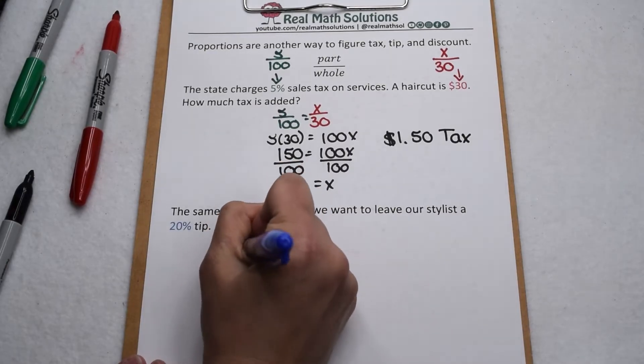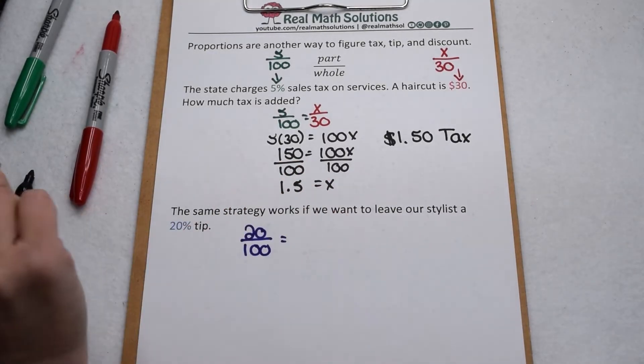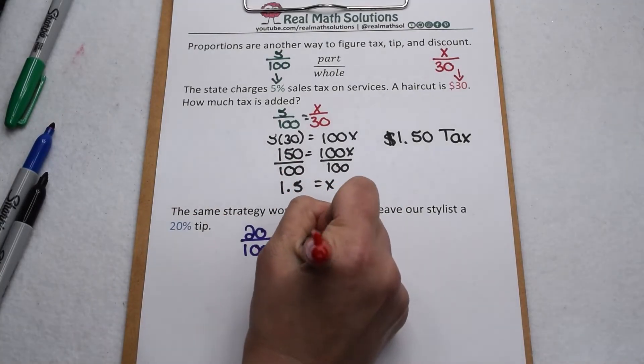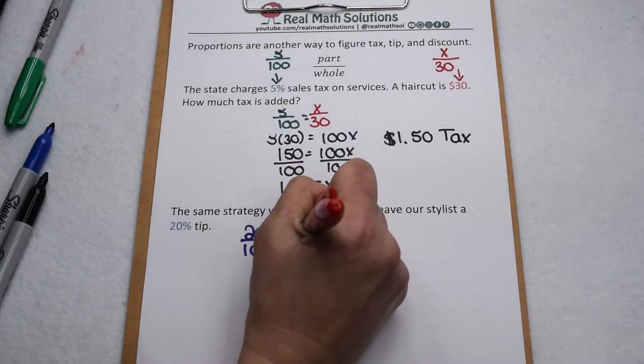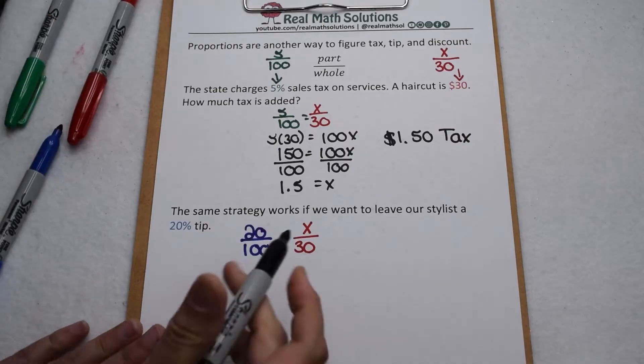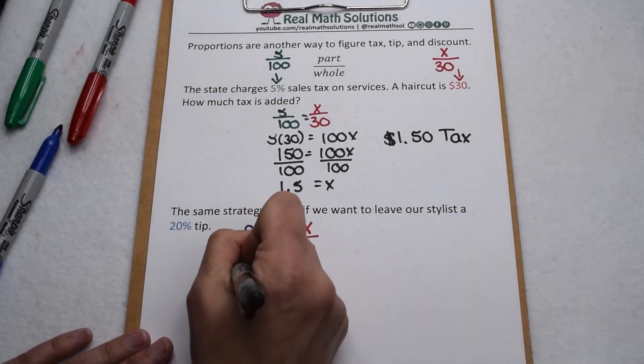20% represents 20 out of 100, so there's our part out of whole. And again, our whole haircut costs $30 and we're looking for what part of that we're going to leave in a tip. So now that we have that set up, we can again solve with cross products.